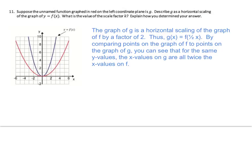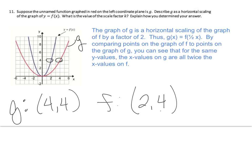Number 11: suppose the unnamed function graphed in red is g. Describe g as a horizontal scaling of y equals f(x). The graph of g is a horizontal scaling of f by a factor of 2. Therefore, g(x) equals f(½x). By comparing points for the same y-values, the x-values on g are all twice the x-values on f — at the same y-value of 4, g is twice f.